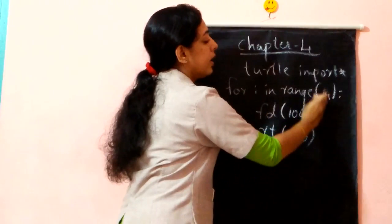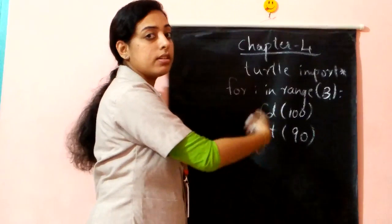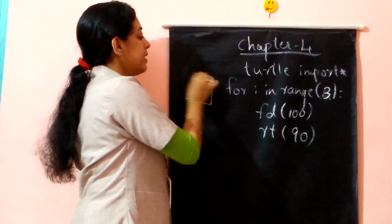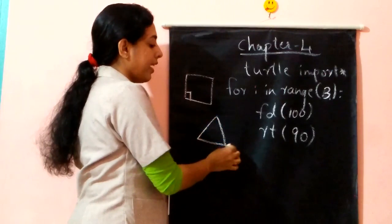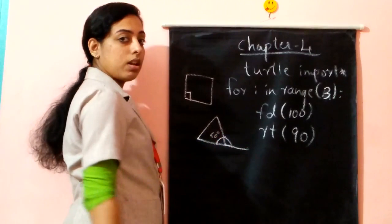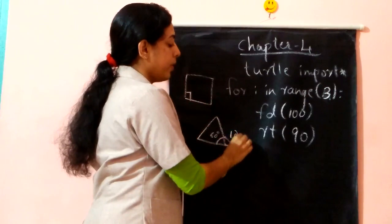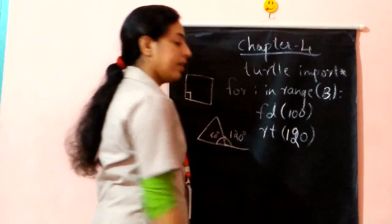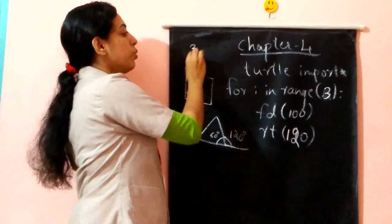Three times this instruction gets repeated. What about the angle? For the square it is 90 degrees. For drawing a triangle, always take the exterior angle measurement. For an equilateral triangle it is 60 degrees interior, but the exterior angle is 180 minus 60, which gives 120 degrees. So you must write 120 degrees for drawing a triangle. You can also calculate it as 360 divided by the number of sides.